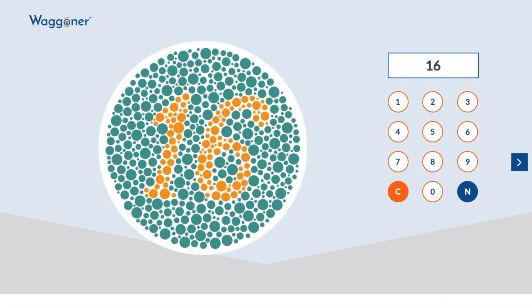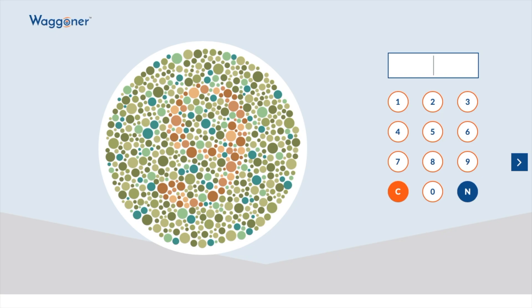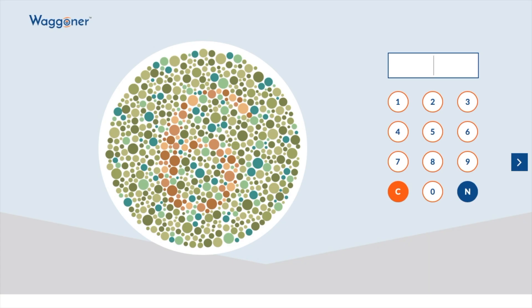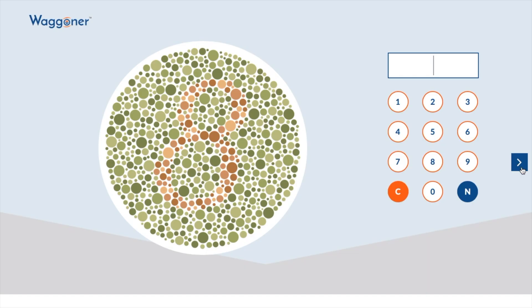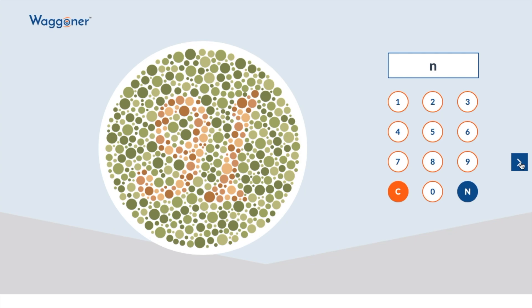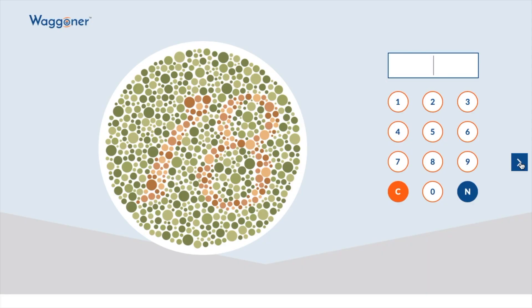This is the testing page. There are two ways to enter answers. One, you can simply use your mouse or touch screen and enter the answer from the keypad and then select the arrow. Or two, you can enter the answer using your keyboard and then select enter. Each process will take you throughout the test smoothly.